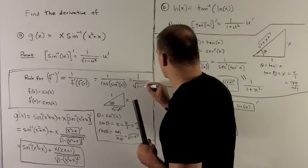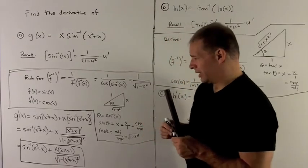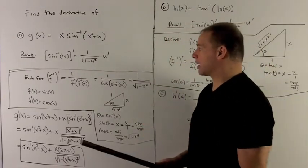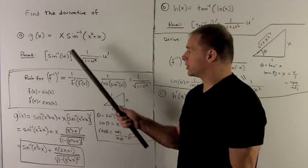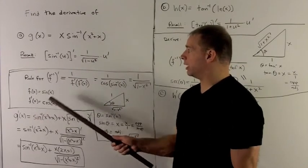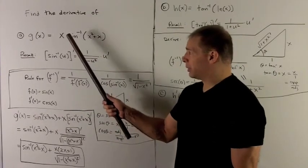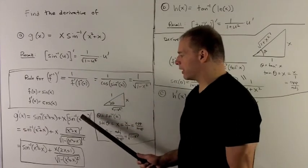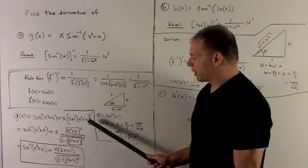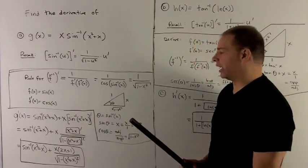Now we can apply the derivative. We're going to start off with a product rule — derivative of the first, which is 1, times the second, plus the first times the derivative of the second, and this we're going to have to peel apart using the chain rule.